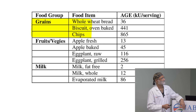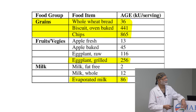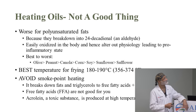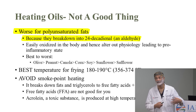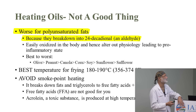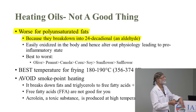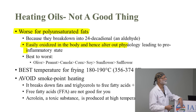Chips, biscuits, grilled eggplant, evaporated milk — all very high in AGEs. Processed foods are no good for you. The worst are oils with polyunsaturated fats because they break down into aldehydes, which participate in advanced glycation end products. They're also easily oxidized in the body. From the best to the worst vegetable oil: olive oil, peanut, canola, corn, soy, sunflower, safflower. When you go to your favorite restaurant, how do you know which oil they used? They used the cheapest oil possible — that's going to be safflower, sunflower, or soy oil.